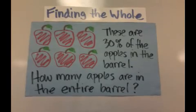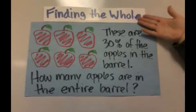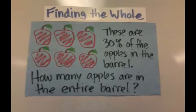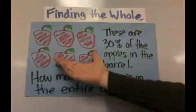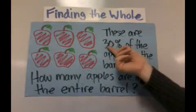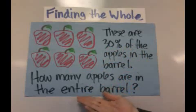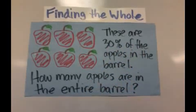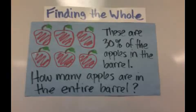All right, in this video I'm going to show you how to find the whole, and we're going to focus on this problem. It says these are 30% of the apples in the barrel. How many apples are in the entire barrel? So we have these six apples equals 30%, and we're trying to find the entire barrel, which means we're trying to find how many apples is equal to 100%.